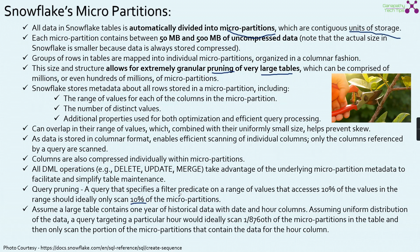If you add a filter predicate that scans only 10% of the data from the table, it will obviously scan only 10% of the micro partitions. For example, from the Snowflake documentation: if there is a large table containing one year of historical data with hourly distribution, a query targeting a particular hour would ideally scan only 1 out of 8,760 micro partitions. Out of the 8,760 micro partitions, only one partition is needed for processing, which is very good for query performance.